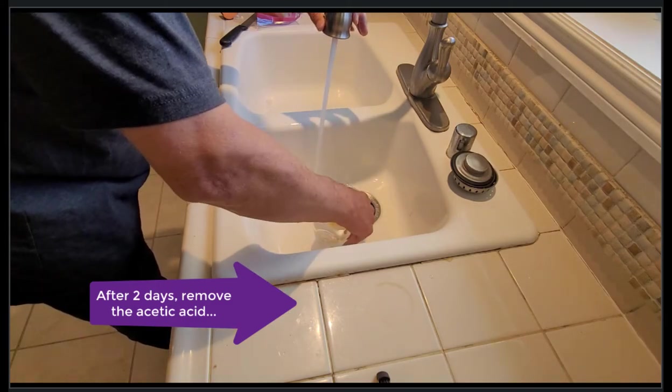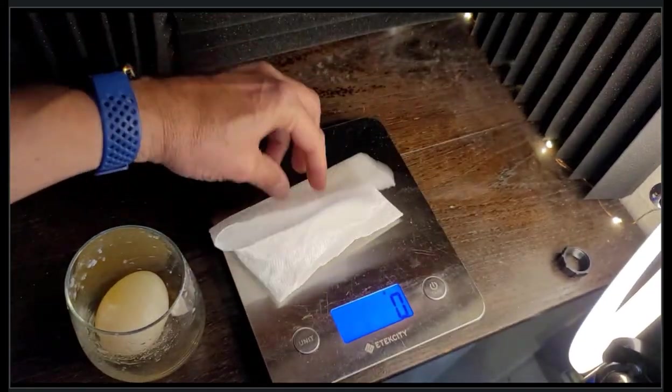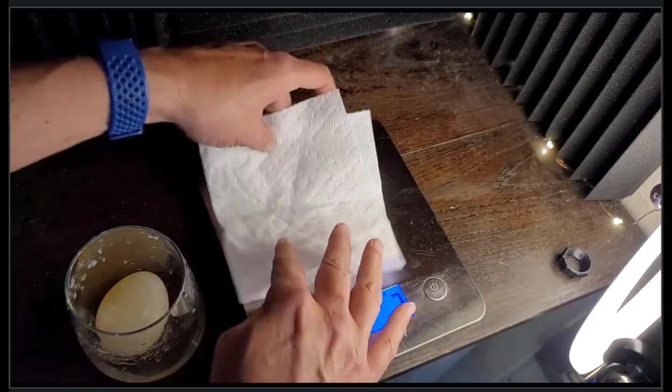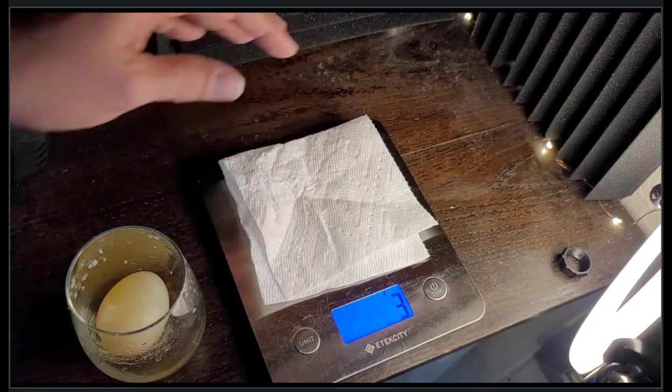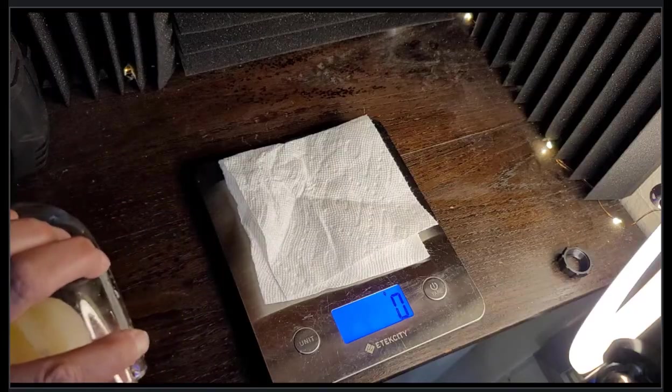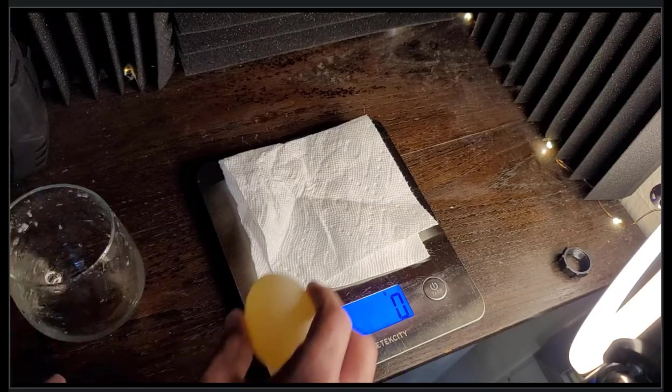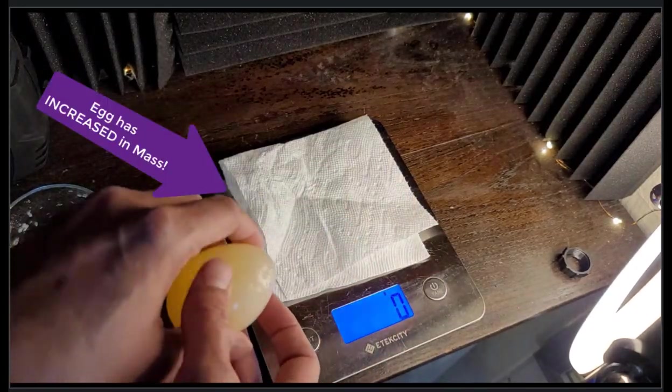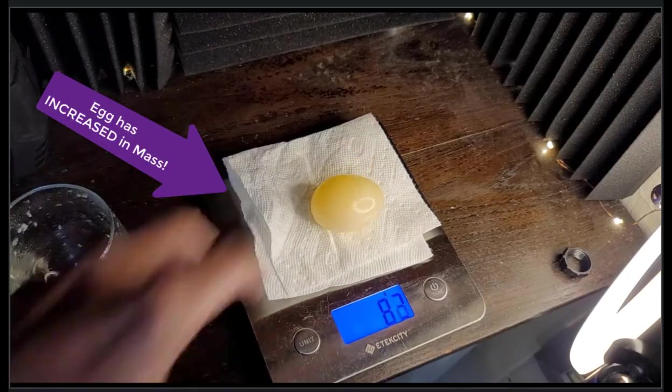After a total of two days, I'm going to drain the vinegar out carefully. I'm going to rinse off my egg and then I'm going to re-weigh it. And notice that my egg is now significantly heavier at this point. It now weighs 79 grams.